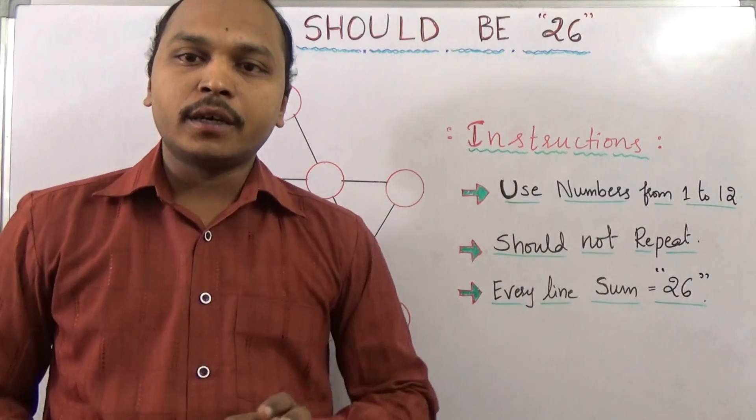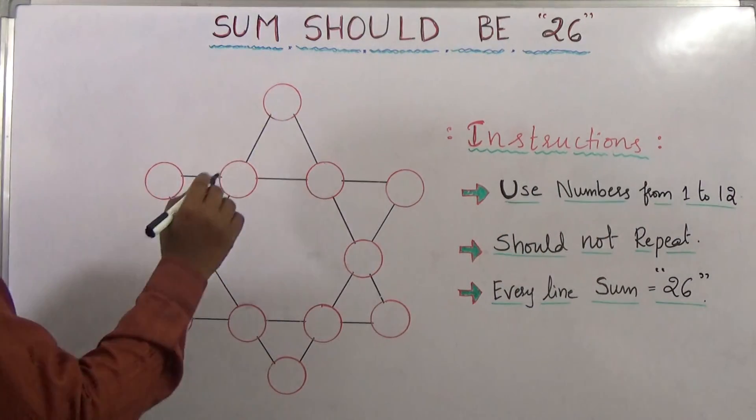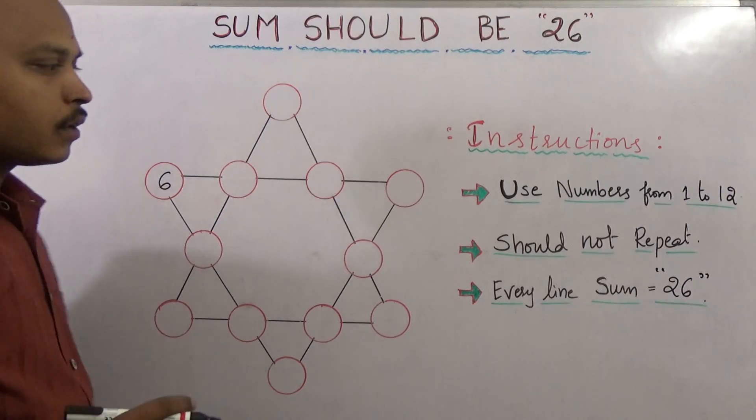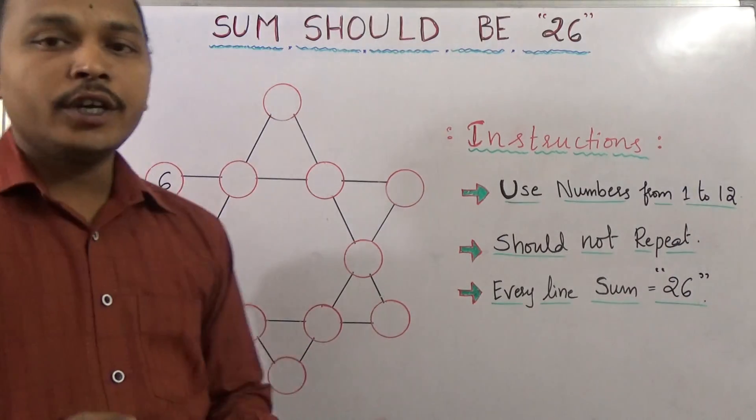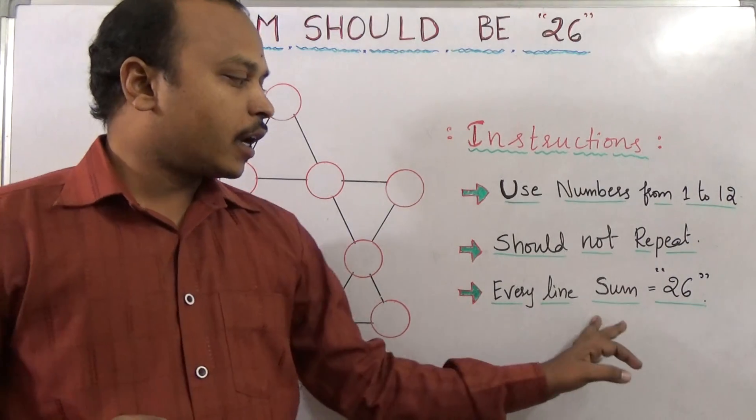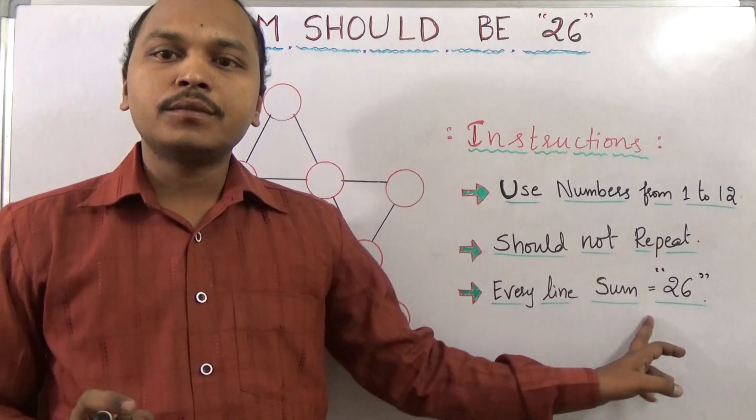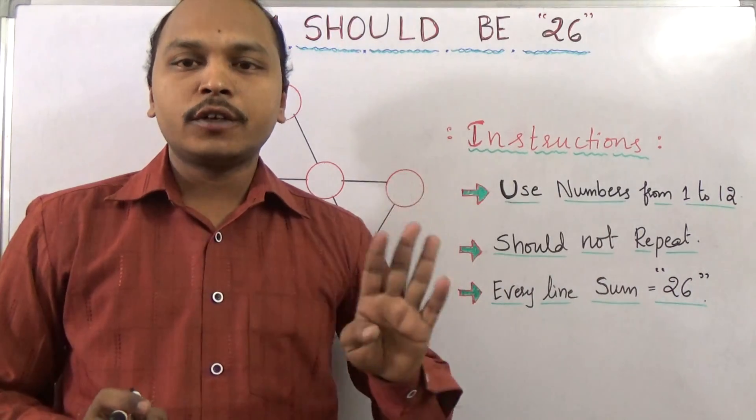For example, if I keep 6 in one circle, 6 should not be in any other circle. Now we need to arrange every row so the sum should be 26. If I add all four circles' numbers, the sum should be 26.